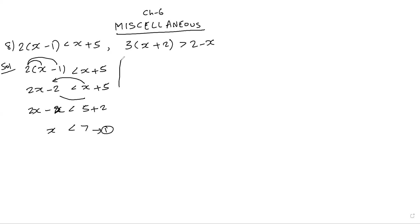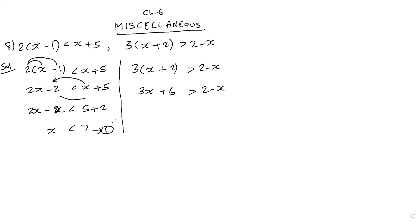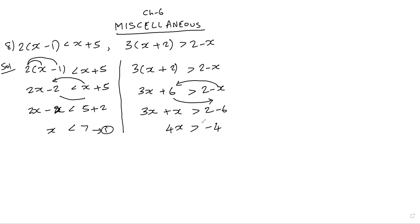For the second inequality, 3(x + 2) greater than 2 minus x. Expanding: 3x + 6 greater than 2 minus x. Moving x terms to the left: 3x + x, and constants to the right: 2 minus 6, giving us 4x greater than minus 4.